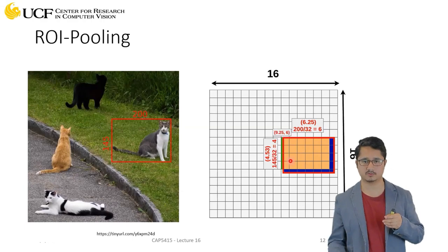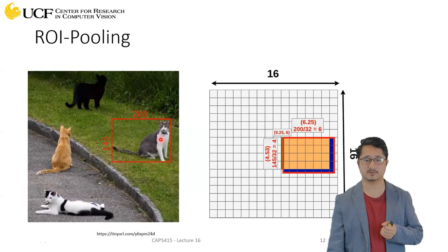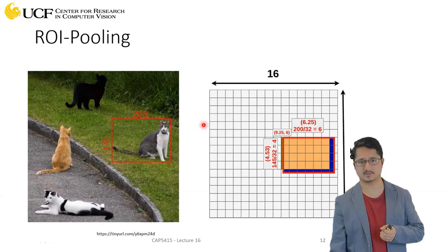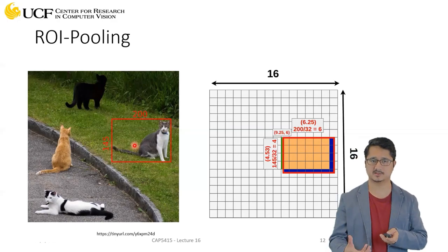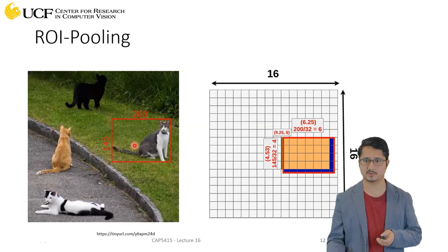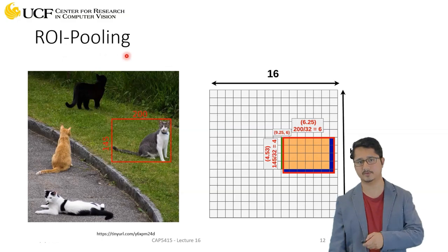For bounding box detection, the network can adjust for how much the box is misaligned with the ground truth. But for fine segmentation, losing that information means we cannot find the boundary at all — the boundary is completely lost. That's why fine-grained alignment without losing any information is more important for segmentation than for object detection. This is why instead of ROI pooling we use ROI Align.